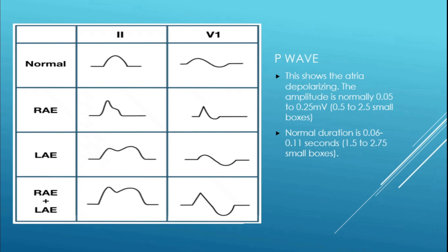The first waveform is the P wave, which shows the atria depolarizing. The amplitude is usually 0.05 to 0.25 millivolts — about 0.5 to 2.5 small boxes — and the duration is 0.06 to 0.11 seconds, or 1.5 to 2.75 small boxes. You can see examples of normal P waves, right atrial enlargement, left atrial enlargement, and combined enlargement — interesting to know, but it won't really change how you treat patients in the emergency setting.